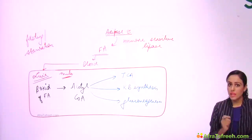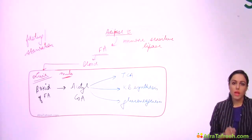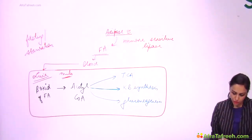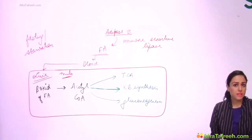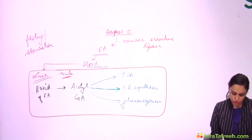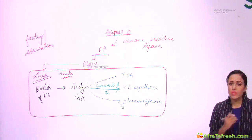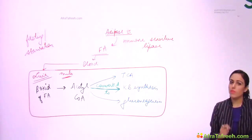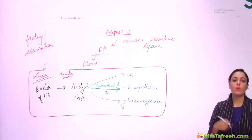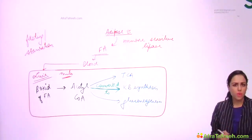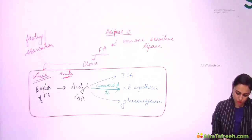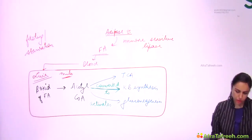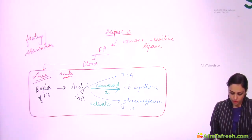When we say acetyl-CoA goes towards ketone body synthesis, it means acetyl-CoA is converted to ketone bodies — it is the starting material for ketone body synthesis. But the arrow from acetyl-CoA to gluconeogenesis does not mean 'converted to' — it means acetyl-CoA activates gluconeogenesis; specifically, the very first step of gluconeogenesis is activated by acetyl-CoA.